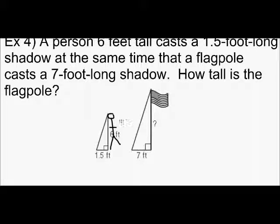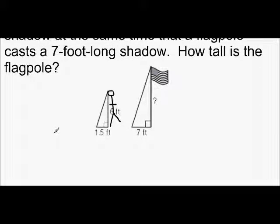So, we're going to set up our proportion. I'm going to say 6 over 1.5 equals X over 7. So, we're keeping the two parts of the triangles together.